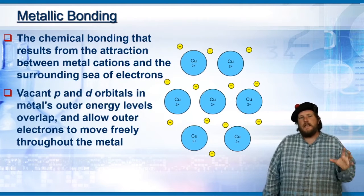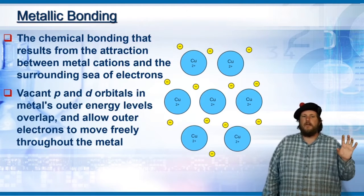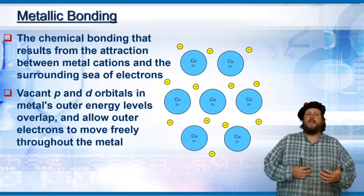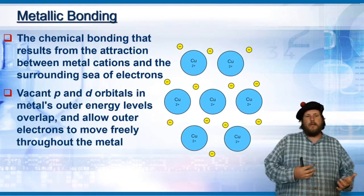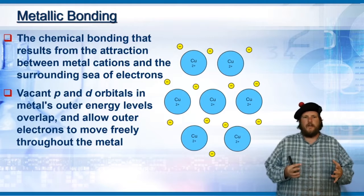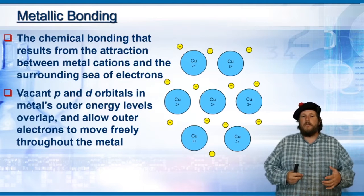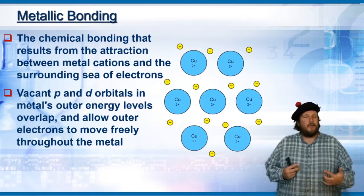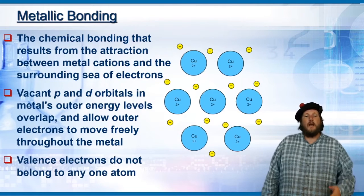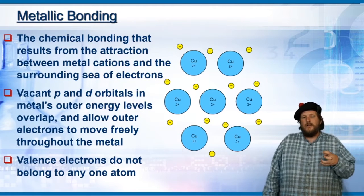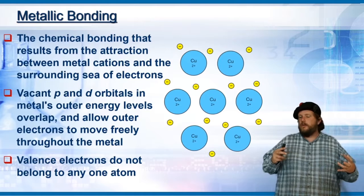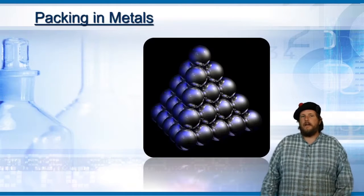There are vacant p and d orbitals in the metal's outer energy levels, and they overlap in energy. That allows the outer electrons to move freely, both physically and in energy levels, throughout the metal. This is why metals are so good at conducting electricity. The valence electrons don't belong to any one atom — they're distributed and shared by all of those atoms.